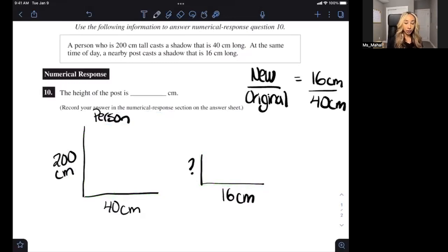So when I go ahead and go 16 divide by 40, I'm going to get a scale factor of 0.4. So that means I needed to multiply this number by 0.4 to get 16, which makes sense. You're multiplying it by a decimal, so you're going to get it smaller.